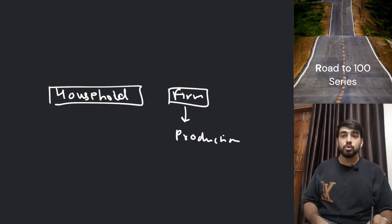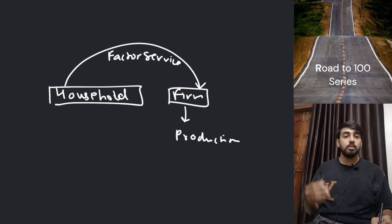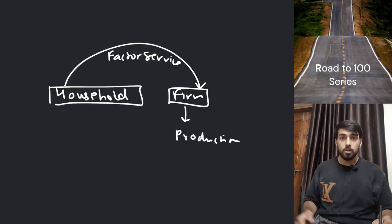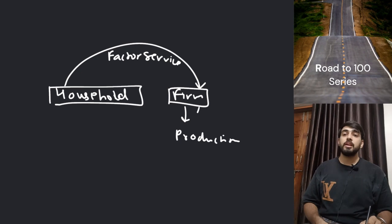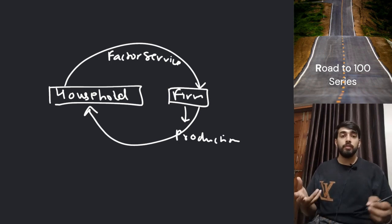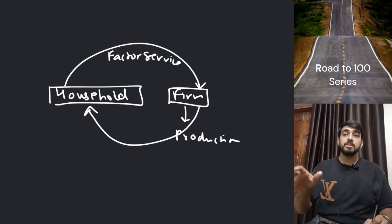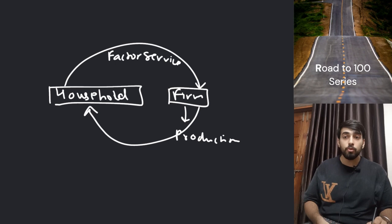So basically household provides all these services to the firm, which we call factor services. These factor services are: land, labor, capital, and entrepreneur. In return, since the firm is receiving services, the firm also has to give something back — it has to give money. Land gets rent, labor gets wages, capital gets interest, and entrepreneurship gets profit, meaning the businessman gets profit. So in exchange for factor services, they receive money, which we call factor payment.